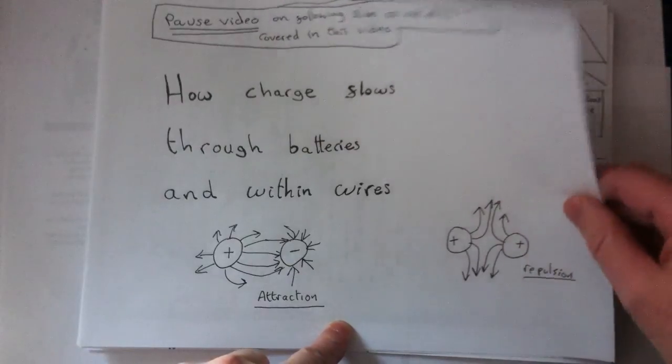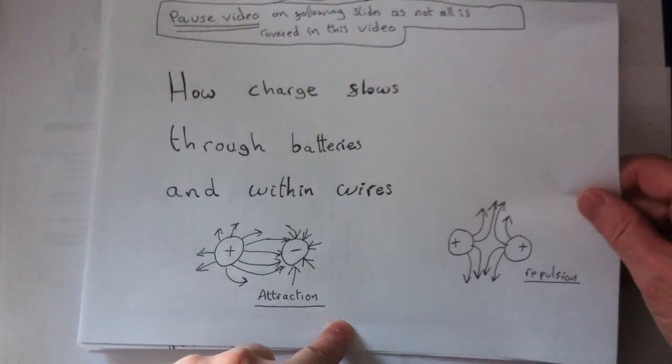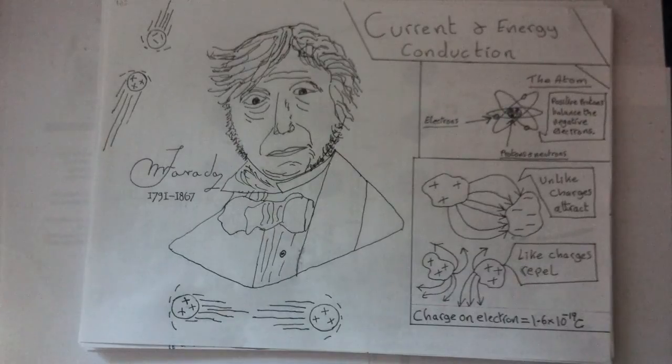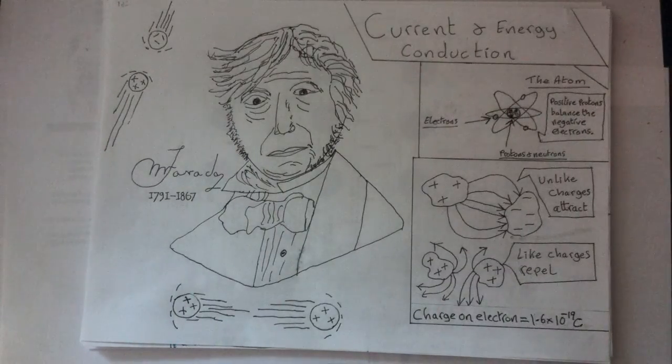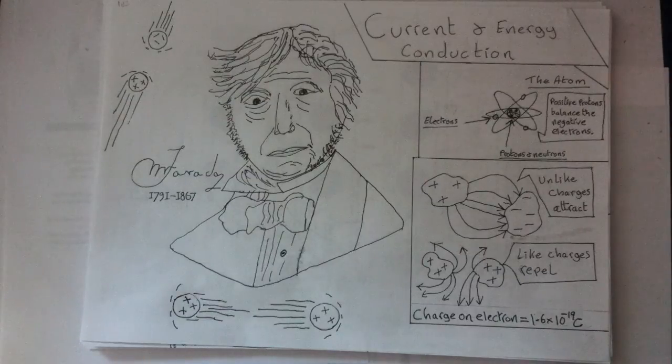This was done by using the fact that all of matter comes in two distinct types we now call charge, where like charge types repel and opposite charge types attract. These types were categorized much earlier still, over 260 years ago by Benjamin Franklin as plus and minus types.